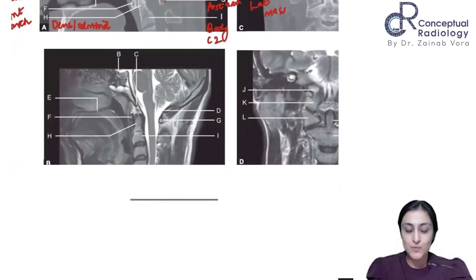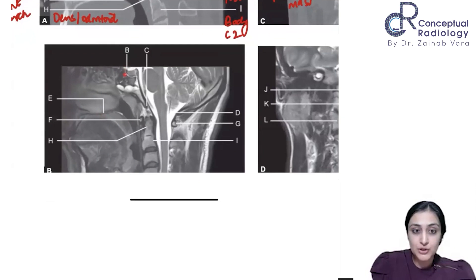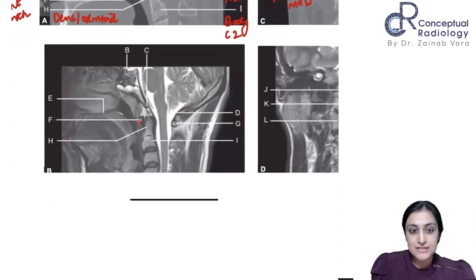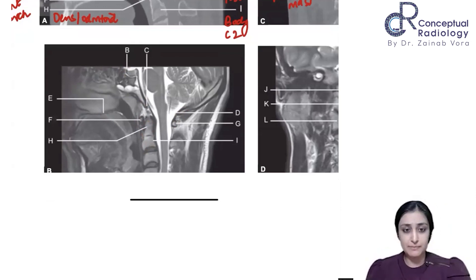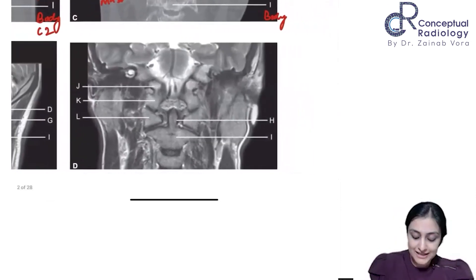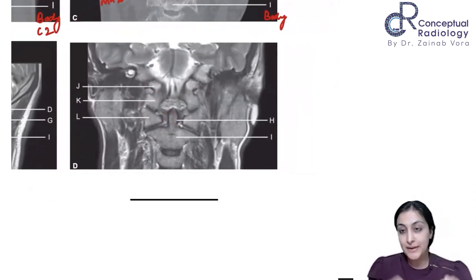On MRI, the same bony points apply. We don't need to run through them again. This is the hard palate point, this is the tuberculum sellae, this is the basion, and this is the opisthion. Can you all see the anterior arch and posterior arch of atlas? Can you all see the dens and C2? On the coronal MRI image, can you see the jugular tubercles, the occipital condyle, lateral masses, body of C2, and dens of C2?